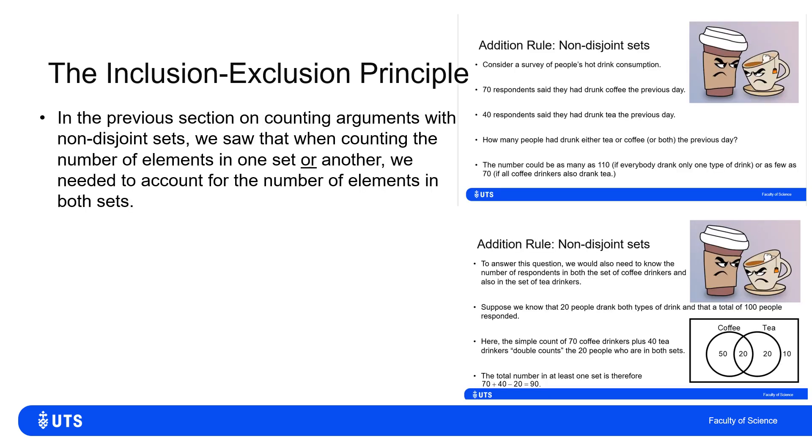In the previous video, we discussed counting arguments in cases where the sets were not disjoint. When considering how many elements are in one set or another, or potentially both, if there's elements in both sets, then the argument was a little bit more complicated.